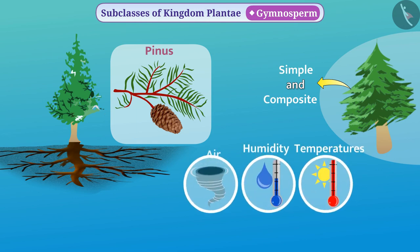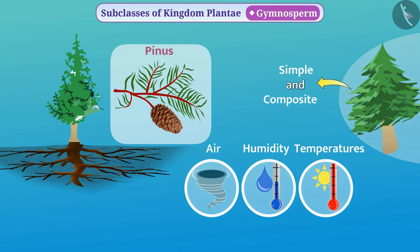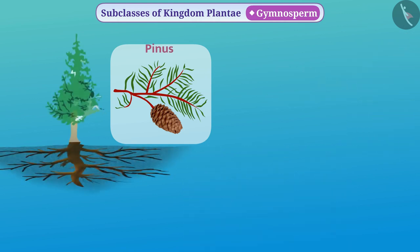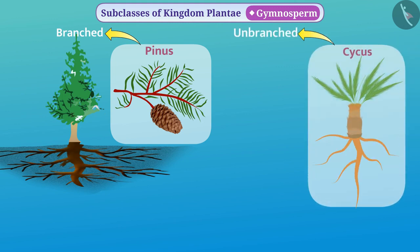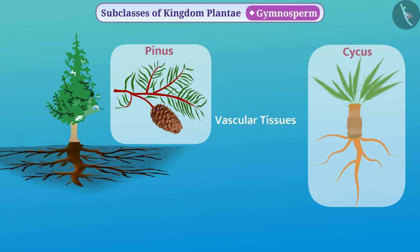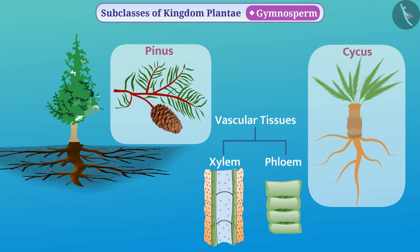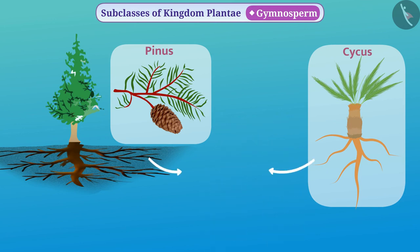The stems of some gymnosperms such as Pinus are branched, while the stems of some gymnosperms such as Cycas are unbranched. They use vascular tissues such as xylem and phloem to transport various substances from one part to another. Mainly they have a taproot system.